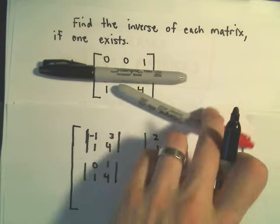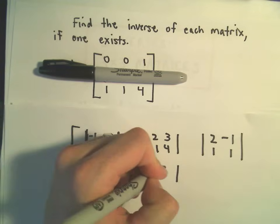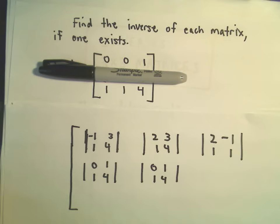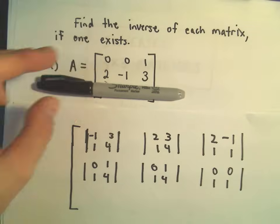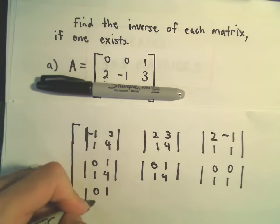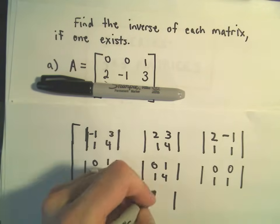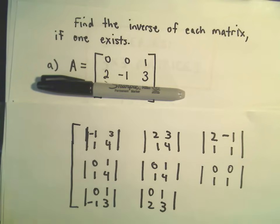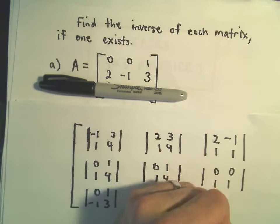If we cover up the second row and the second column, we're left with [0, 1; 1, 4]. If we cover up the second row and the third column, we're left with [0, 0; 1, 1]. If we cover up the third row and the first column, we're left with [0, 1; -1, 3]. If we cover up the third row and the second column, we're left with [0, 1; 2, 3]. And if we cover up the third row and the third column, we're left with [0, 0; 2, -1].